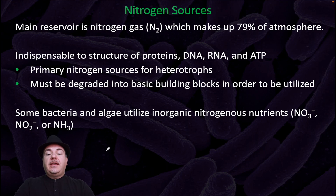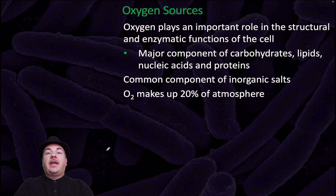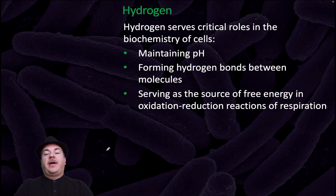Some bacteria and algae utilize inorganic nitrogen sources. Regardless of the source, nitrogen must be converted to NH₃ before it enters the cell — this is the only form that can be directly combined with carbon to synthesize amino acids and other compounds. Oxygen plays an important role in structural and enzymatic functions of the cell and is a major component of carbohydrates, lipids, nucleic acids, and proteins. Hydrogen helps maintain pH, forms hydrogen bonds between molecules, and serves as a source of free energy in oxidation-reduction reactions of cellular respiration.